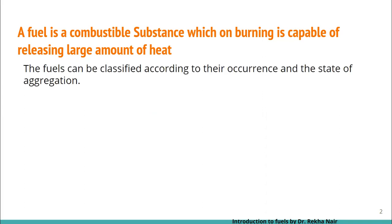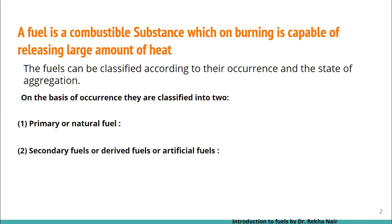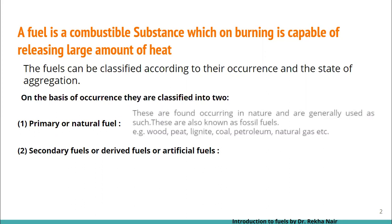The fuels can be classified according to their occurrence and even by the state of aggregation. On the basis of occurrence, they can be further classified into two types: primary fuels, which we call as natural fuels, and the second category is secondary fuels, or we can call them as derived fuels or artificial fuels.